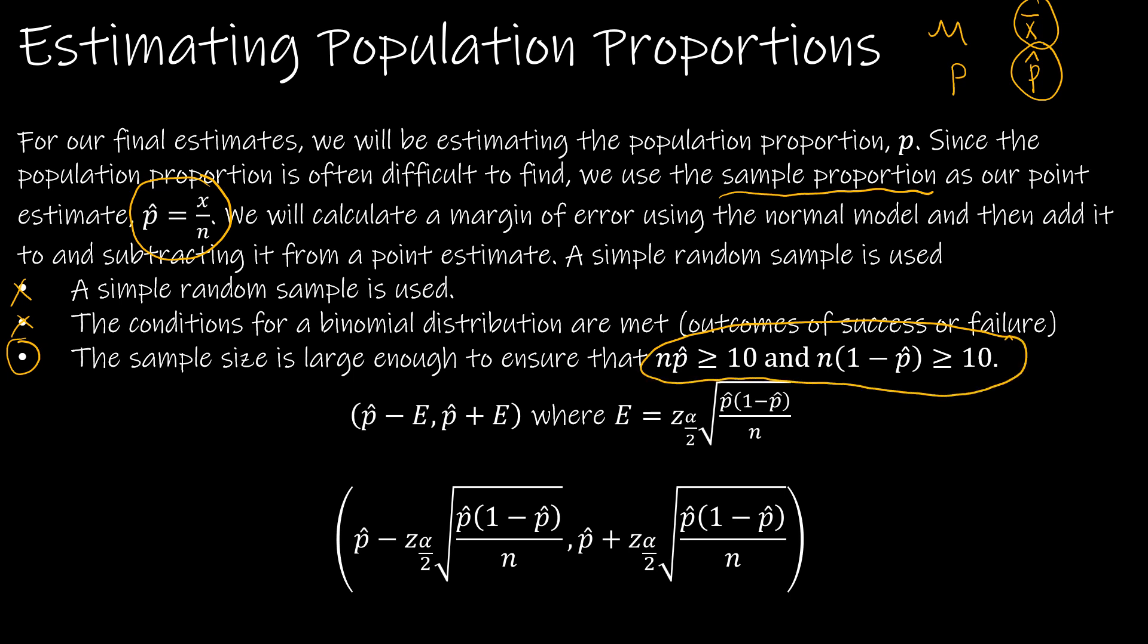We are looking for the number of successes and the number of failures to be at least 10. So n times P hat has to be greater than or equal to 10, and n times Q hat, or 1 minus P hat, is greater than or equal to 10.